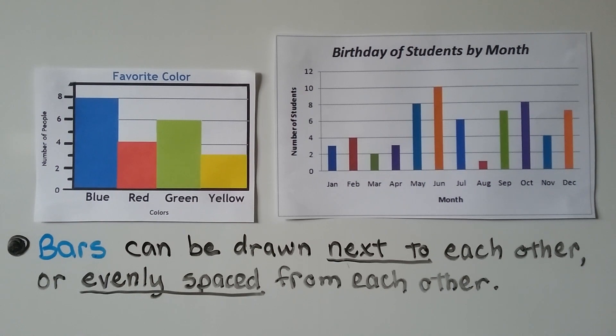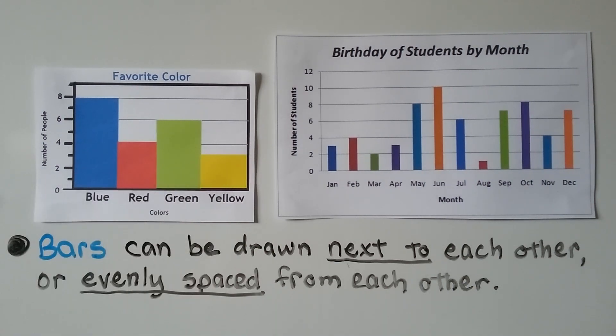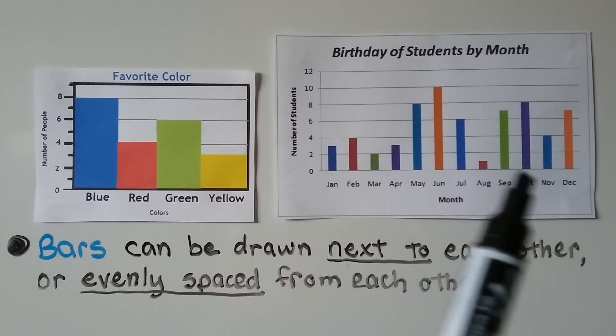We would draw our bars and shade them in, and purple would be at the line for 12. When we make our bar graphs, the bars can be drawn next to each other like I have here, or they can be evenly spaced like in this bar graph.